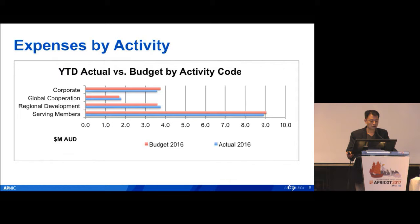We split expenses into four different activity goals: corporate and global cooperation, regional development, and serving members. You can see the actual expense is pretty much consistent with what we budgeted last year, and major cost goes to serving members.